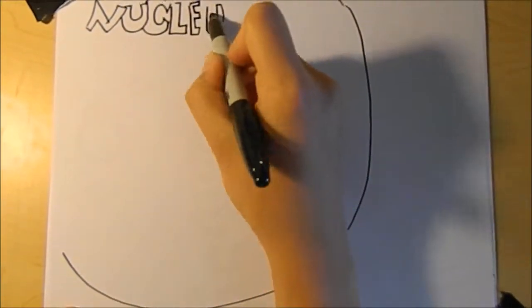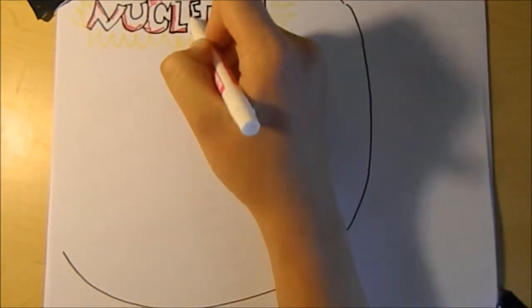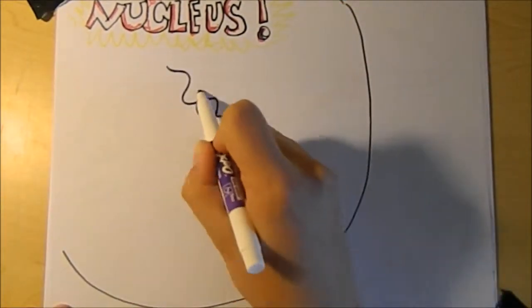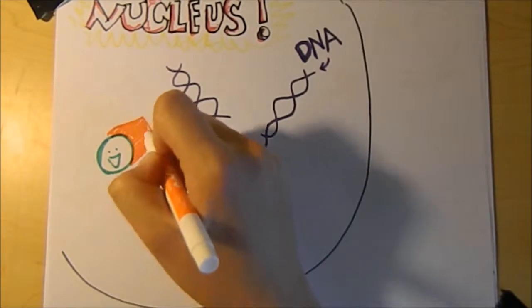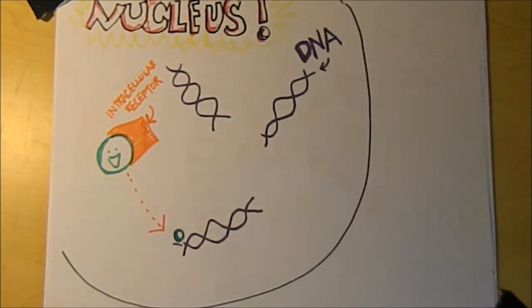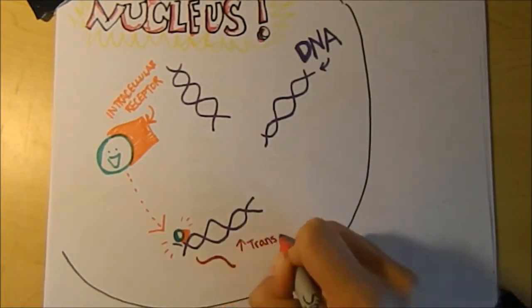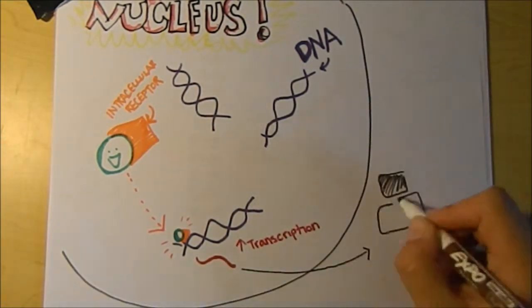The nucleus is the control center of a cell. Inside is DNA, where genes are found. When thyroid hormone enters the nucleus, it binds to an intracellular receptor. This complex then binds to the hormone response elements on DNA, causing transcription. RNA then goes out of the nucleus to the ribosomes where translation takes place.